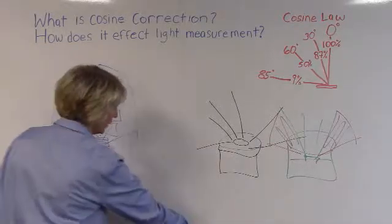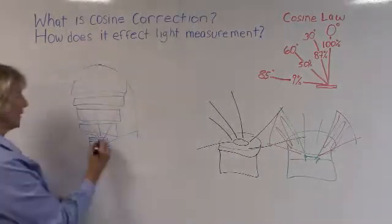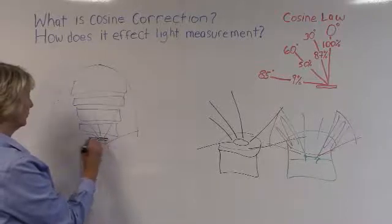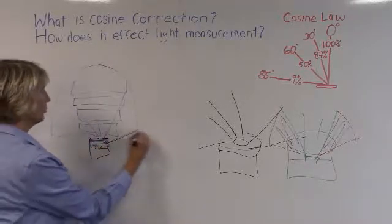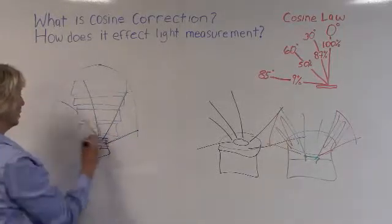If you were to take your cosine corrected detector and place it at the same reference plane, it's going to measure the same amount of light that your product sees.